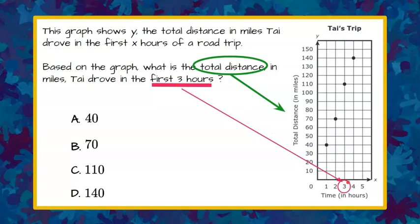So when we take three, we're going to go straight up to the point on the graph that represents three hours from the x-axis. And we're going to go straight left to the y-axis and identify that when Ty has gone three hours, the total distance in miles is 110.